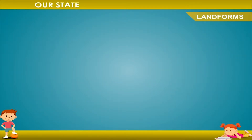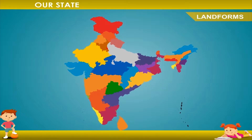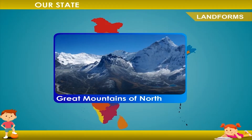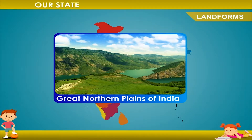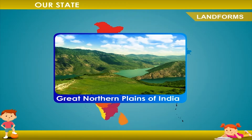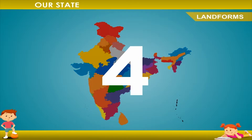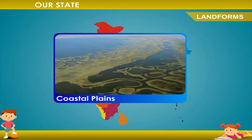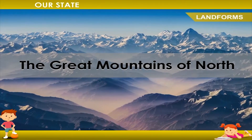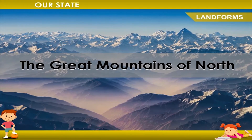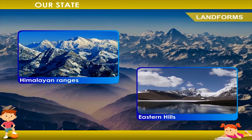Landforms: India can be divided into five major landforms — the Great Mountains of North, the Great Northern Plains of India, the Peninsular Plateaus, the Coastal Plains, and the Islands. The Great Mountains of North includes the Himalayan Ranges and the Eastern Hills or the Purvanchal.